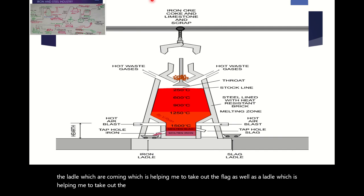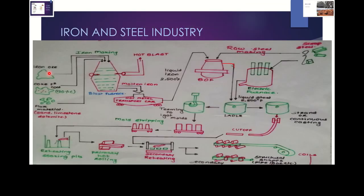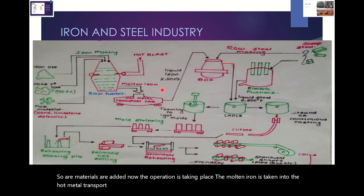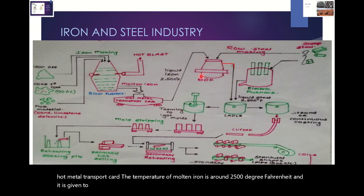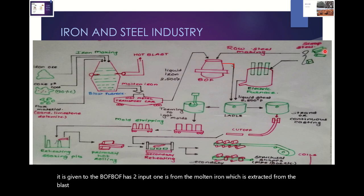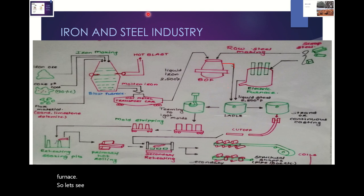After the blast furnace operation, the molten iron is taken into the hot metal transport car. The temperature of this molten iron is around 2500 degrees Fahrenheit. It is then given to the BOF. The BOF has two inputs: one from the molten iron extracted from the blast furnace, and another from scrap steel. BOF stands for Basic Oxygen Furnace. Let's see the operation of the Basic Oxygen Furnace.